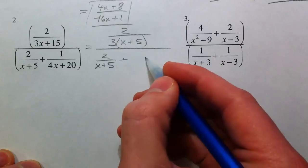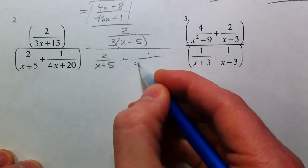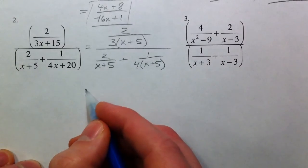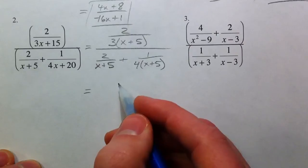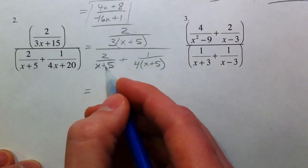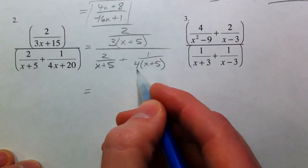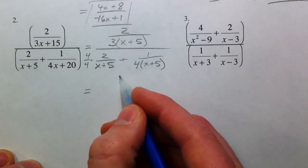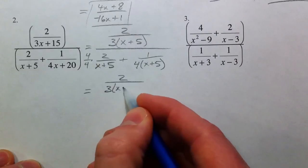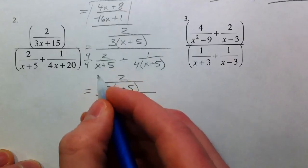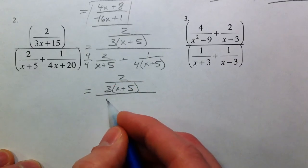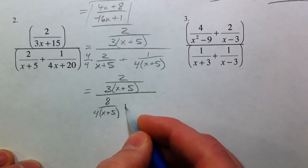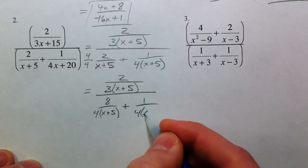So 2 over x plus 5 plus 1 over 4 times x plus 5. So common denominator up top, well that's already combined. On the bottom, this has x plus 5, this has x plus 5, this one has an extra 4. And so I'm going to multiply that first one by 4 over 4. So you get 2 over 3 times x plus 5, divided by 8 over 4 times x plus 5, plus 1 over 4 times x plus 5.